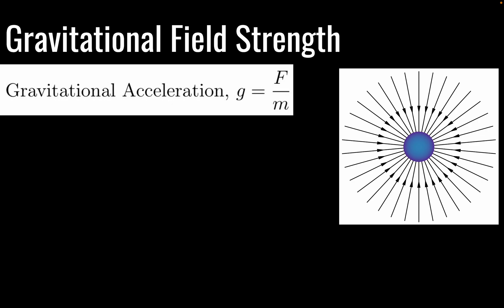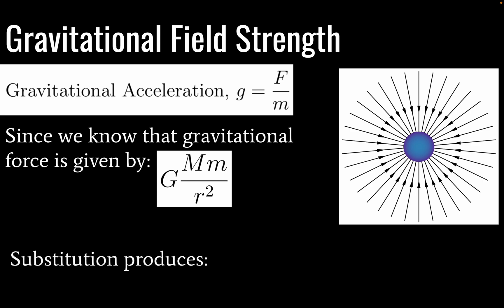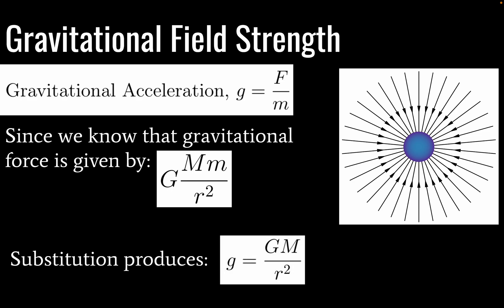So gravitational acceleration, g, is equal to force divided by mass. You might also recognize this as a unit occasionally used for gravitational force: newton per kilogram. Since we know that gravitational force is given by this, if we use substitution, we're going to get g equal to the gravitational constant times the mass of our large body divided by our radius squared. The mass of our test mass will cancel out.